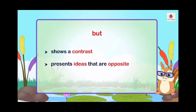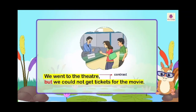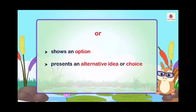'But' presents ideas that are opposite. For instance, you like something but I like something else. Example: 'We went to the theater, but we could not get tickets for the movie.' Here you see a contrast — we went to the theater, but we could not get tickets. It shows contrast. Next is 'or.'